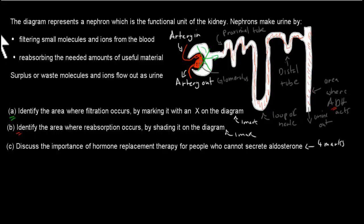And for Part C, discuss the importance of hormone replacement therapy for people who cannot secrete aldosterone. A couple of parts you should do before you start. You should always think of the questions as discuss, so we have to talk about the reasons why it might be important.